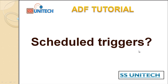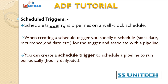Hey guys, welcome to SSUniTech. Today we are going to see about the schedule trigger. In the last video we saw about triggers, and today we'll start with one of the types of trigger, that is the scheduled trigger. A scheduled trigger runs the pipeline on a wall clock schedule. For example, we want to execute a pipeline every day at six o'clock, so we can schedule that and the pipeline will execute at six o'clock.